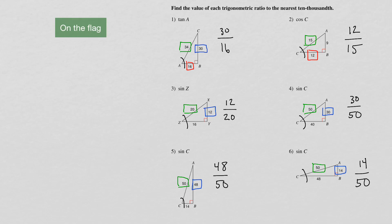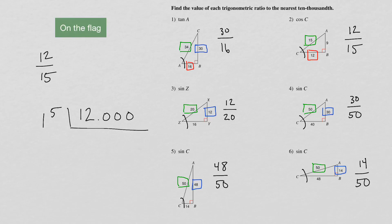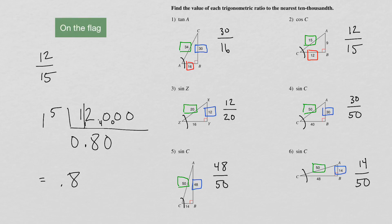Number two: 12 over 15 using on-the-flag division. 12 divided by 15 — 5 is on the flag, so move the decimal over. 1 goes into 1 zero times with 1 left over. 1 goes into 12 eight times with 4 left over. 40 minus 8 times 5 — 40 minus 40 is 0 with 0 left over. So our answer is 0.8. That was cosine of C equals 0.8.